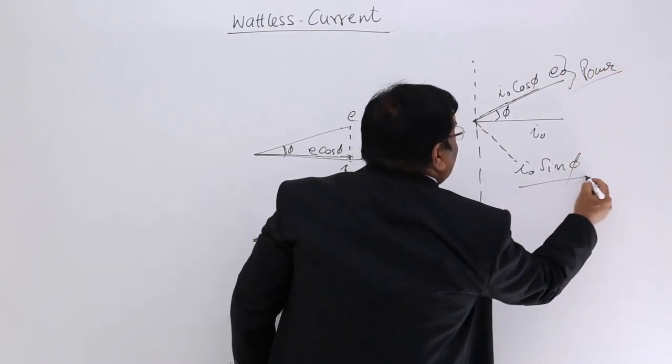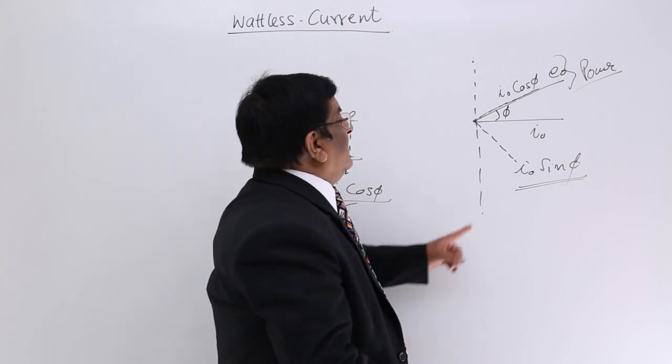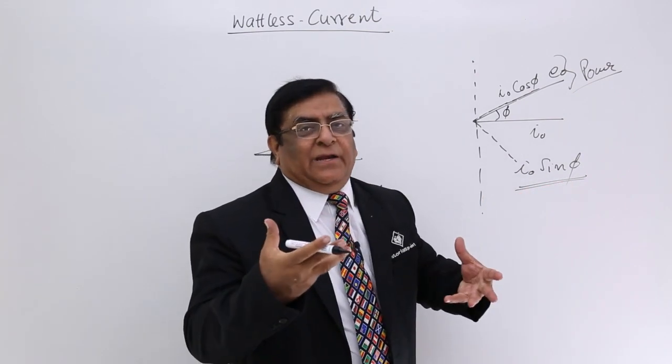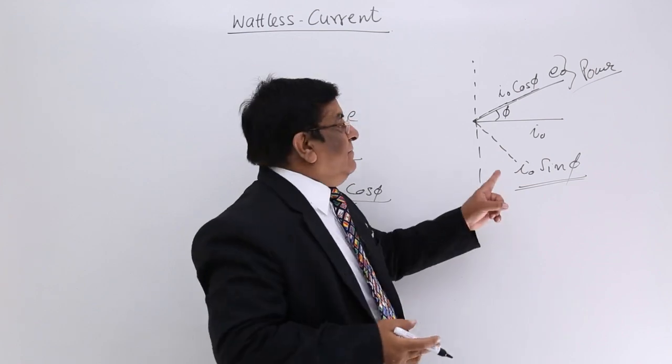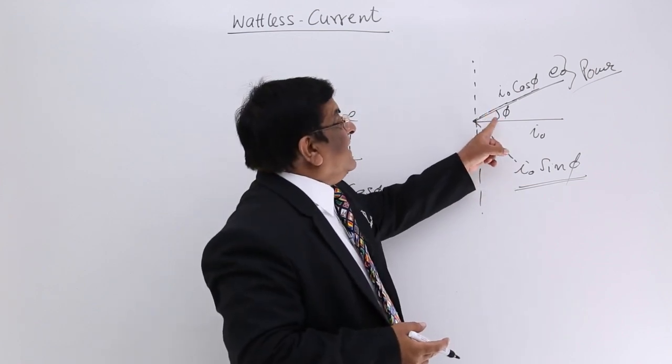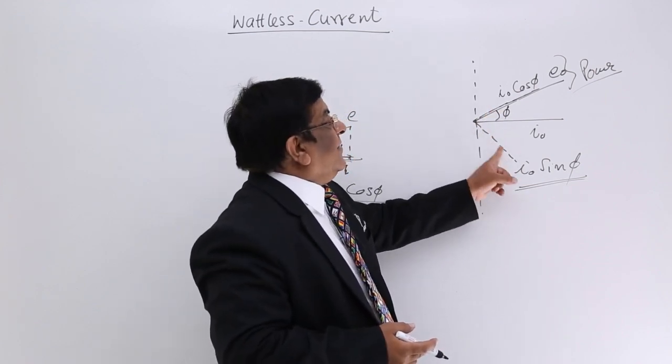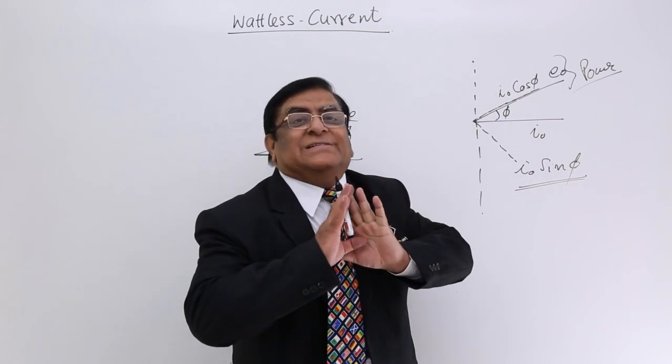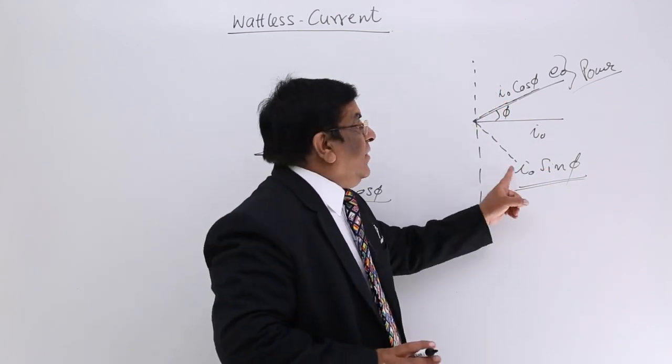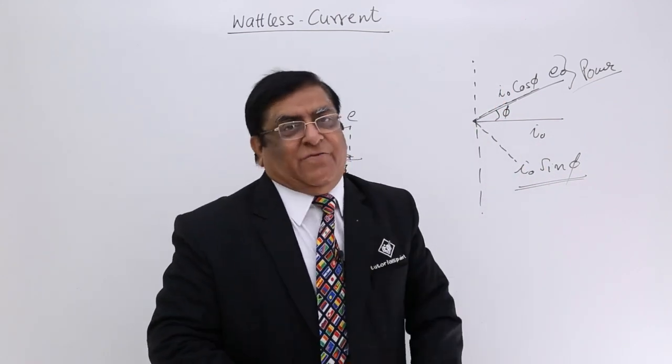Then this current I0 sin φ - is it participating in making any power? Answer: no, absolutely no. Because this is at right angle to E, and at right angles, their multiplication is zero. It does not participate in making power.